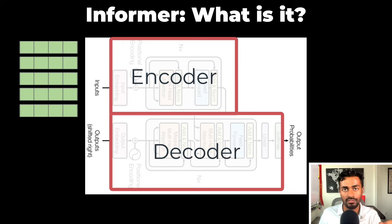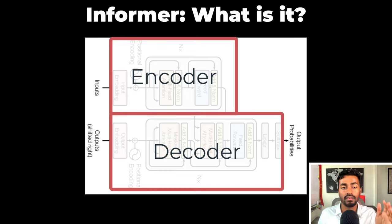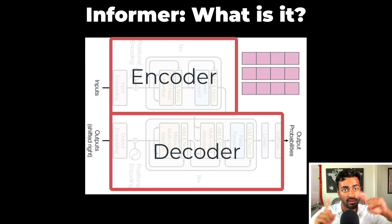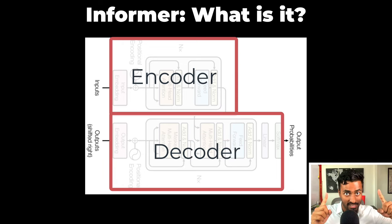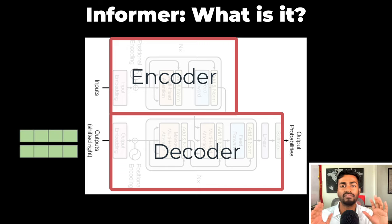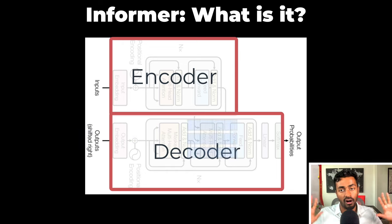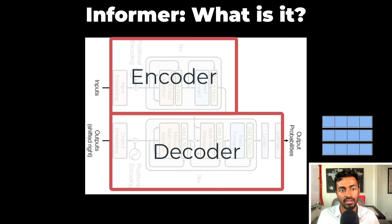Let's walk through the forward pass. Here we pass the time series data in parallel to the encoder. The encoder generates embedding vectors, which may be less than the input sequence length. These encoder output vectors are then passed into the decoder. To the input end of the decoder, we pass some sample of input data which we had originally passed into the encoder, and the decoder uses this information along with the encoder output to generate data for all timestamps at the same time. That's the Informer flow.